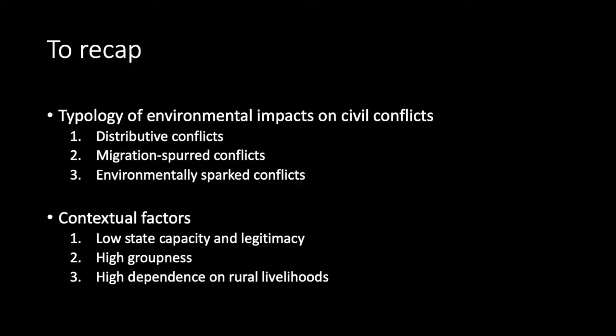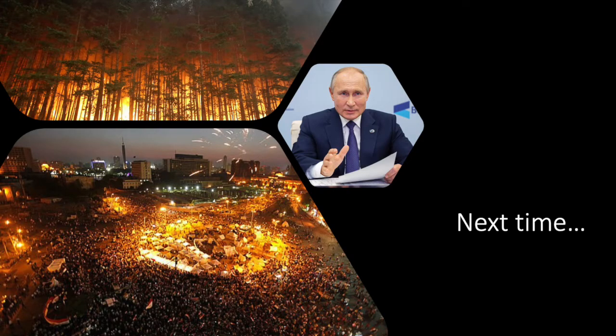This lecture has discussed the role of environmental stress in civil conflicts, elaborating both the typology of conflicts—distributive conflicts, migration-sparked conflicts, and environmentally sparked conflicts—and the contextual factors—like low state capacity and legitimacy, high groupness, and high dependence on agricultural livelihoods—that make these conflicts more likely to occur. We focused largely on how environmental stress in a particular country affects conflict in that country. In the next lecture, we'll turn to how, via global markets, environmental shocks can propagate through the international system—or how wildfires in Russia led to protests and regime change in Egypt.